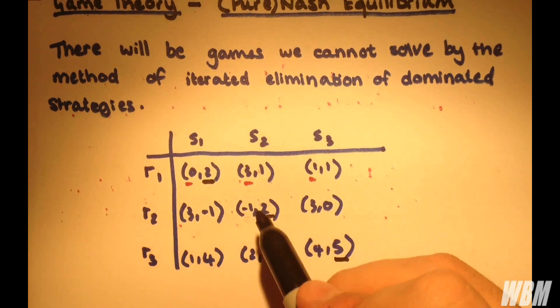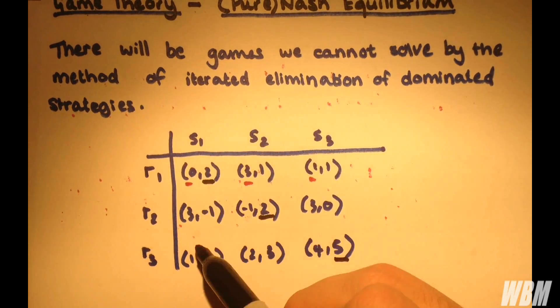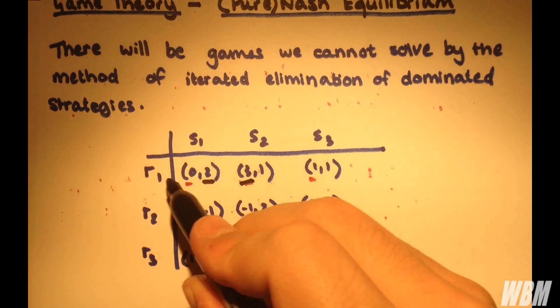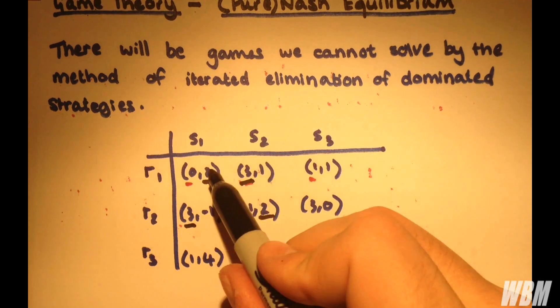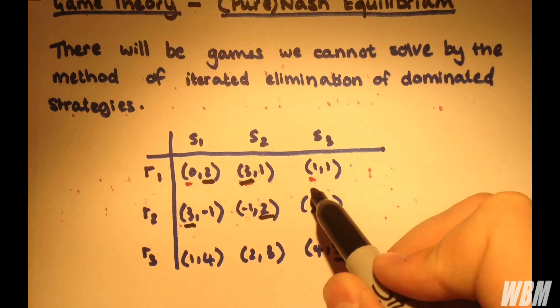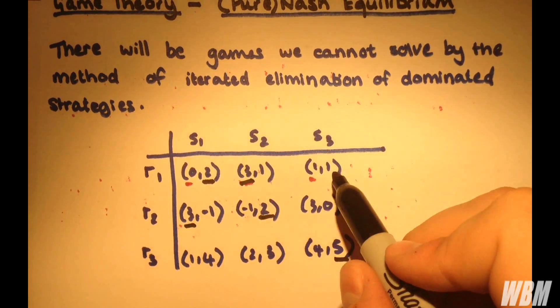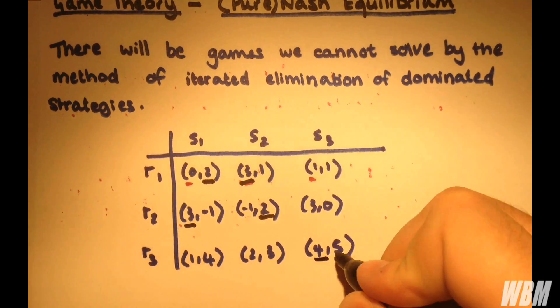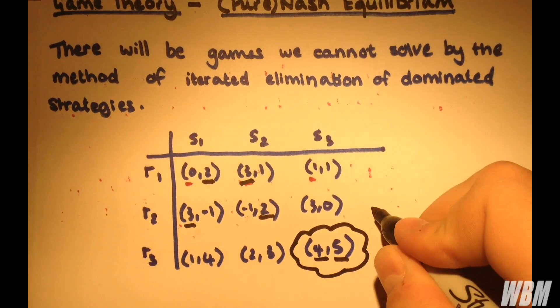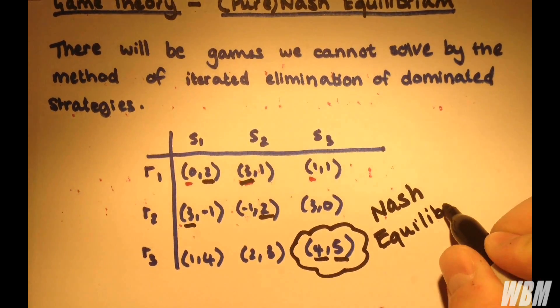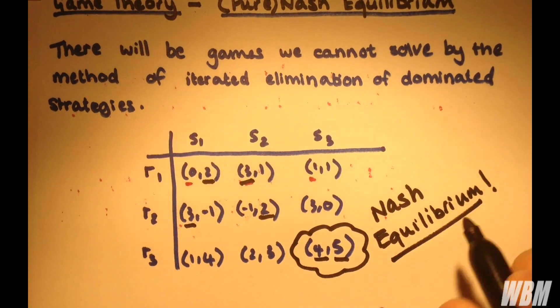OK, now how about for player 1? So for fixed strategy S1, the largest value is R2, 3. And for fixed strategy S2, the largest value is in R1, which is 3. So, so far we don't have any Nash Equilibriums or Equilibria present, because we don't have any fully sort of black outlined pairs. So for fixed strategy S3, 1, 3, and 4, oh, ding, ding, ding, we have a Nash Equilibrium.